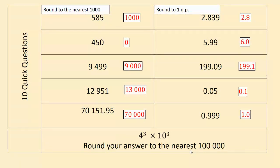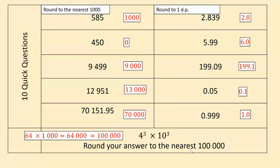With 0.999, it rounds up to 1.0 — if you have only written one, then you need to correct it, because one decimal place means we have to have 1.0 to show the zero. And now the tricky question: four cubed is four times four times four. Four times four is 16, and 16 times four is 64, times 1000 is 64,000. Rounding that to the nearest 100,000, we would round up to 100,000. If you need time to tick and fix, please pause the video.